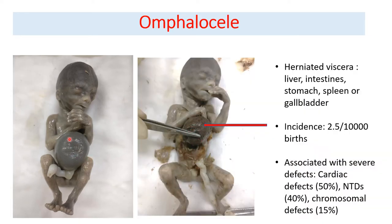After dissection of the omphalocele, removing the amnion and peritoneum layers, we can see a large liver along with loops of intestine. The liver is the primary viscera to herniate out, along with intestine, stomach, spleen, and gallbladder. The incidence is 2.5 per 10,000 births. Omphalocele is usually associated with other anomalies: cardiac defects in 50% of cases, neural tube defects in 40%, and chromosomal defects in 15%.